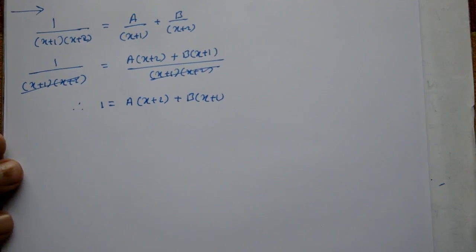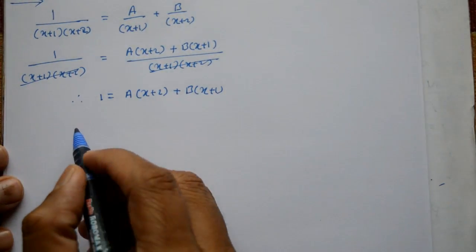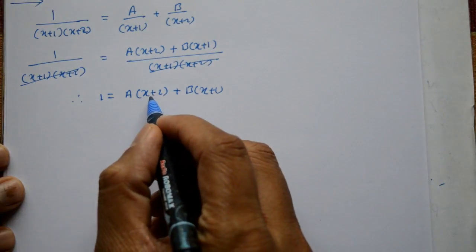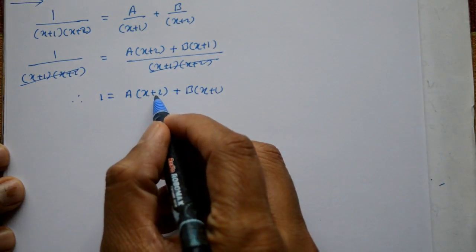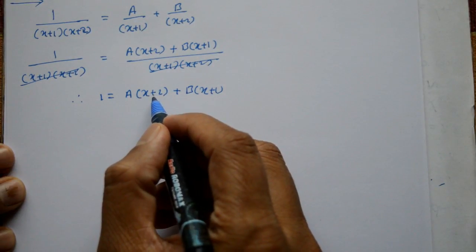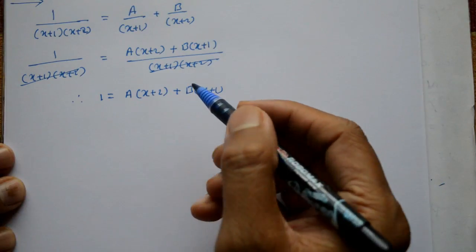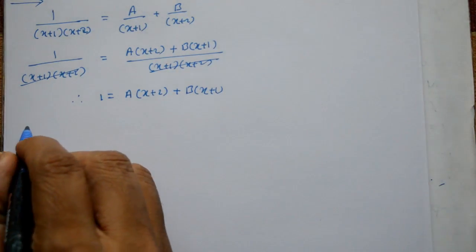Hamko A and B value ko find karna hai. Kya karna hai, either x+2 equal to 0 lahenge, or taking coefficient of x or constant term lahenge. Ishtar hai, I am layi sakte hai.